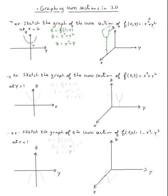Let's do the next example: sketch the graph of the cross section of f(x,y) = x² + y² at y = 1. That would be z = f(x, 1), where x varies but y is fixed at y = 1. Wherever we see y, we plug 1, so that would be x² + 1² = x² + 1. So z = x² + 1, which is a parabola with the vertex at 1.